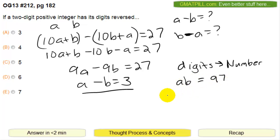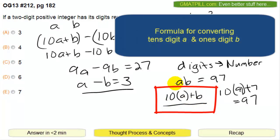Well then, that's like, you have to multiply the A by 10, and then you have to add the B. So in this case for 97, you would be doing 10 times 9 plus the 7, and that would get you to 97. So this is the formula for converting the digits to a number.